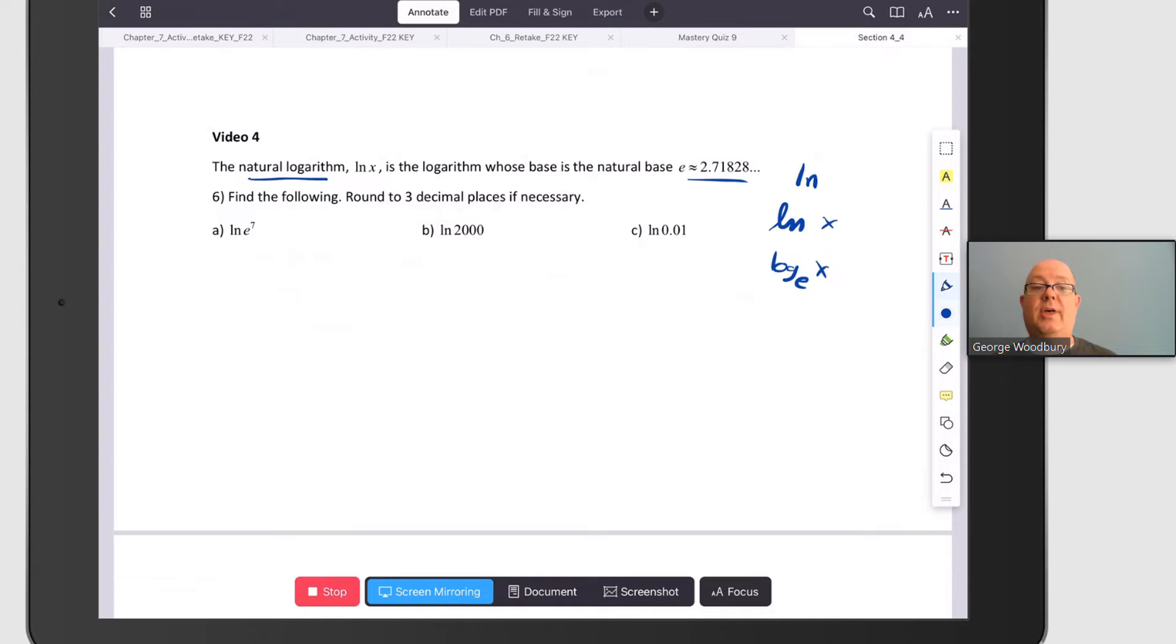Remember that ln, natural log, of e to the seventh is essentially log base e of e to the seventh, and so what that exponent means is e to what power gives you e to the seventh. We know that that should be seven.